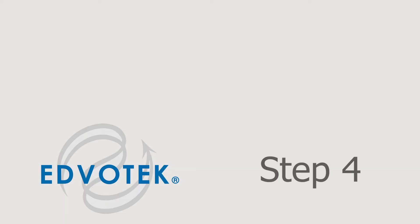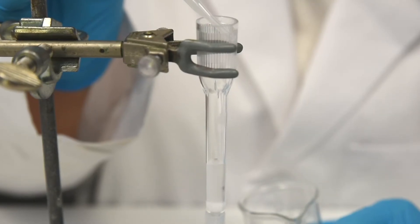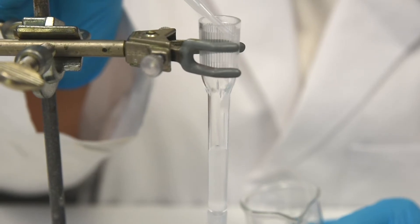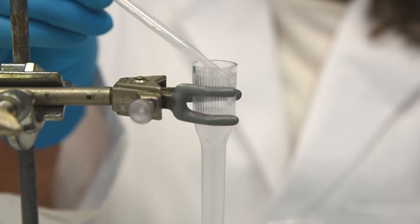Step 4: Carefully pipette 4 ml of the mixed slurry into the column by letting it stream down the inside walls of the column.